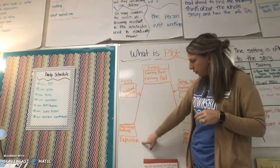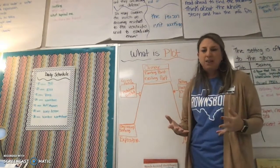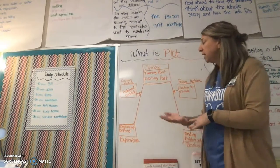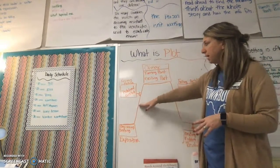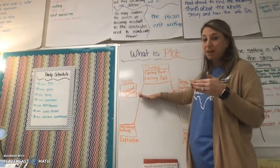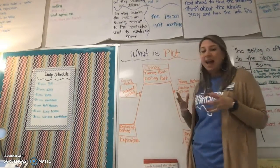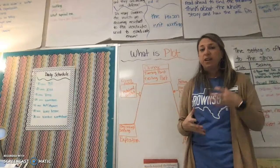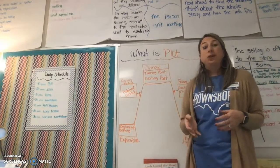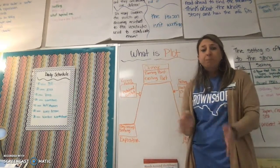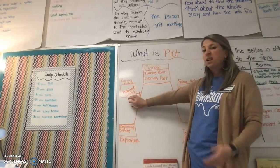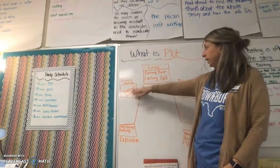We have exposition, which just means the beginning of the story — who's in the story, what is the setting, those kinds of things. And then we're going to go up the mountain. The way I want you to think about this is it is rising up the mountain. So the rising action is the conflict or the problem that is happening in the story. Usually when we have a story, they're going to tell us the characters and the setting and where it's taking place. And then we're going to find out what the problem is.